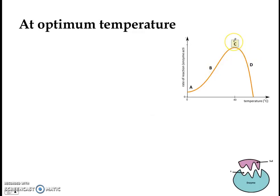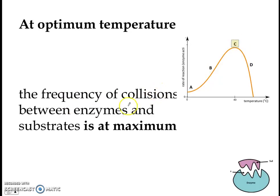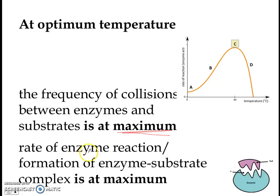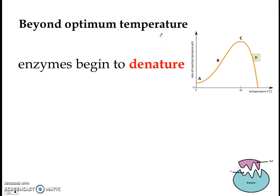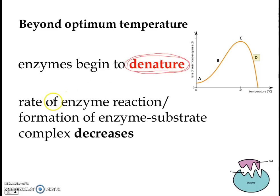At the optimum temperature (point C), the frequency of collisions between enzymes and substrates is at a maximum, and therefore the rate of enzyme reaction — or rate at which enzyme-substrate complexes are formed — is also at a maximum. Beyond the optimum temperature (point D), enzymes begin to denature, which is why the rate of enzyme reaction decreases sharply. Important note: enzymes do not die or melt at high temperatures — you must use the word 'denature.'